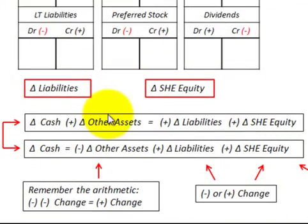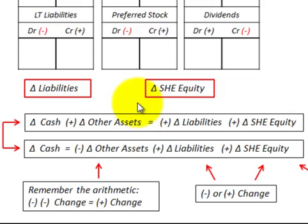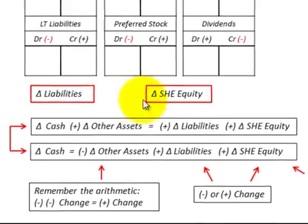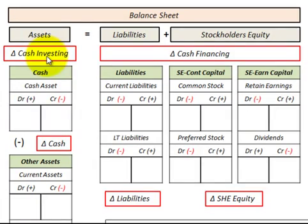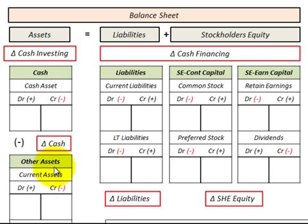We're going to look at a simple equation you can use when reconciling your net income adjustments for operating activities — converting net income from the accrual to the cash basis. Before we get into the equation, let's look at how this cash flow statement is broken down. We have cash for investing activities in the assets section, with our cash account, and then we subtract out the other assets — current assets and long-term assets — which is where our cash from investing activities comes from.